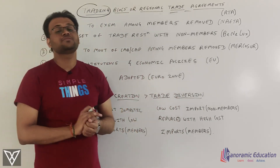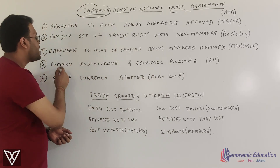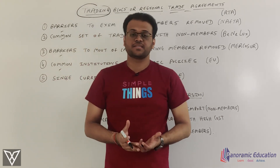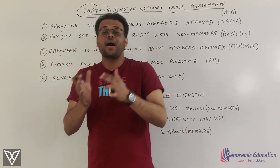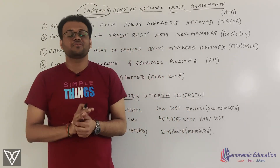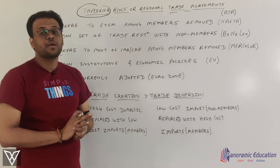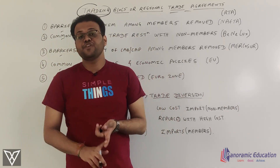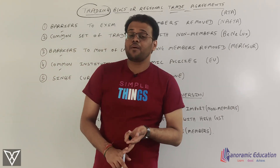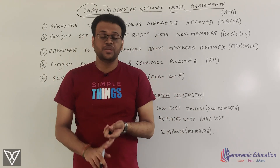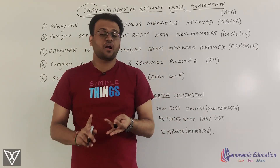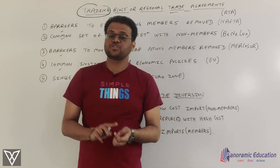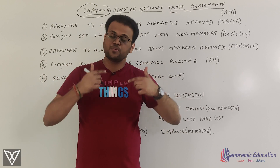In agreements, there are five main models. The first is the free trade agreement. The second model is customs union. The third model is common market. The fourth model is economic union. The fifth model is monetary union. This is the sequence.